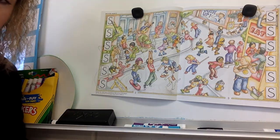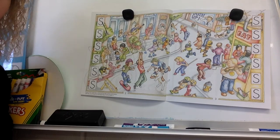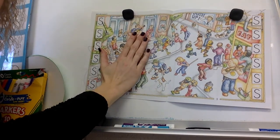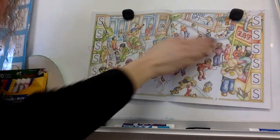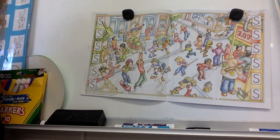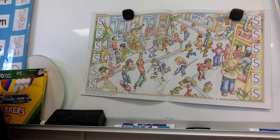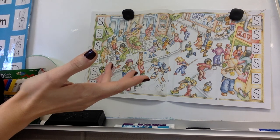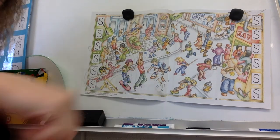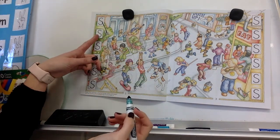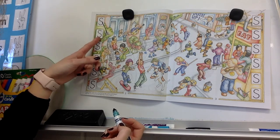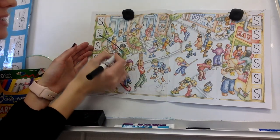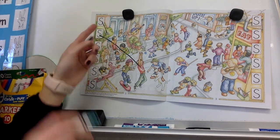Park your pencil. Where else do you see something on this page that starts with the letter S? We're not looking over here yet — these S's are for this page. I see our new super kid on this side. I see Sal right here. So take your pencil, go to the second S, and draw a line to Sal. S-s-sail. S-s-squirrel. Park your pencil.